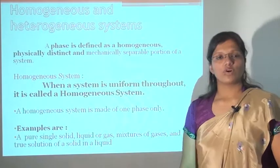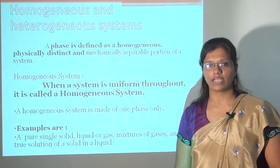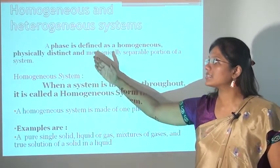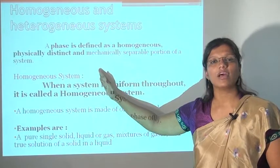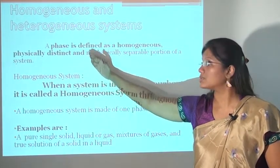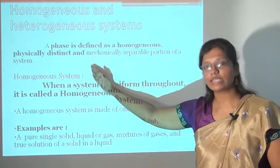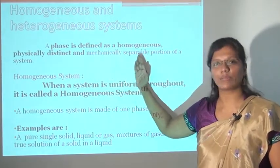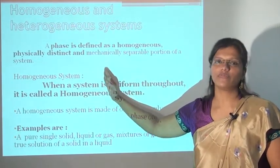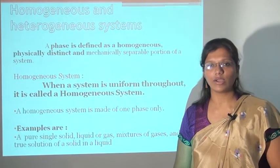Here, one image is given to you. This portion which you have taken into consideration for your study or research is known as the system. The rest of the part is known as surroundings, and the imaginary surface or line which separates the system and the surrounding is known as the boundary. Now, there are two types of systems. First is homogeneous system and second is heterogeneous system. A phase is defined as a homogeneous, physically distinct, and mechanically separable portion of the system. There are three types of phases: solid, liquid, and gas.